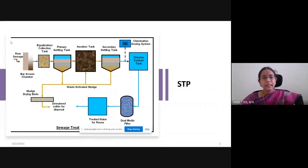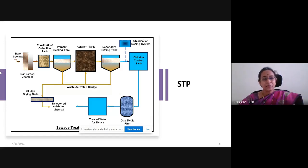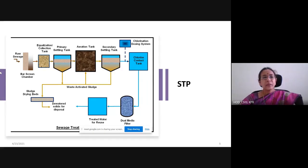When raw sewage enters into the treatment plant, we first usually have a bar screen or some other screen chamber. This screen chamber is especially used to remove the debris or bigger size particles, such as stones, paper, or some other plastic materials. Screen chamber is the first step of treatment. When the sewage treatment plant receives sewage from more than one part of the industry or household, it is collected into a separate tank called a collection tank. Here, sewage from various parts are put together and equalized.